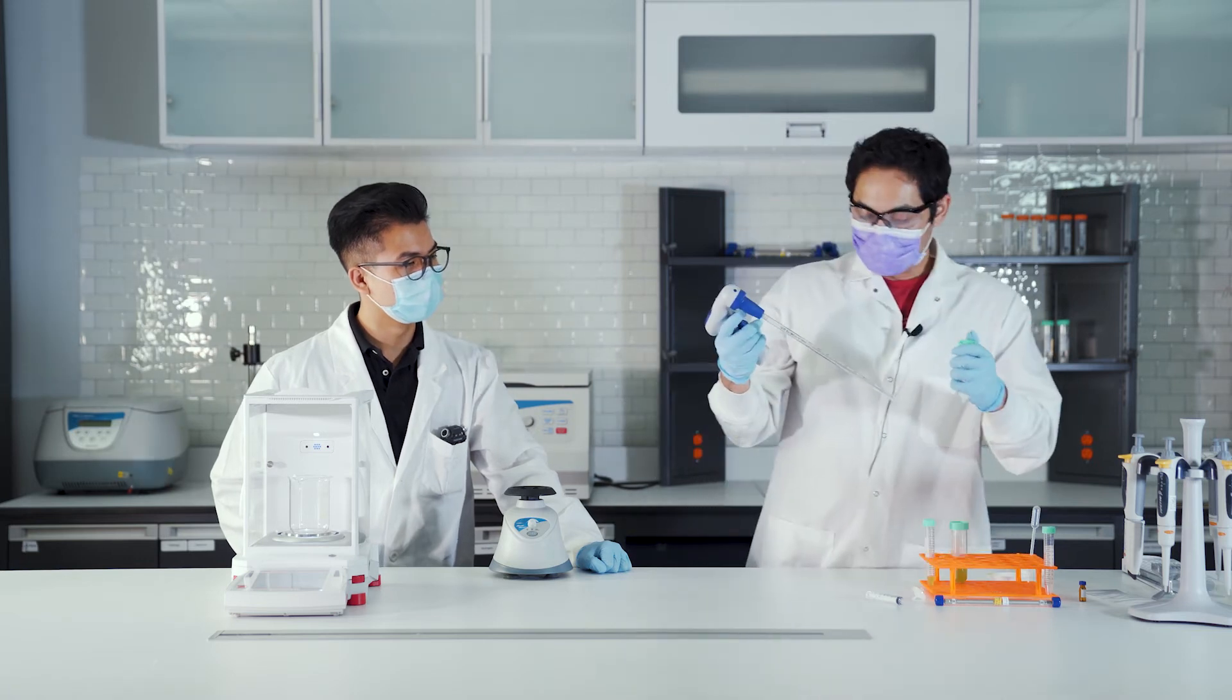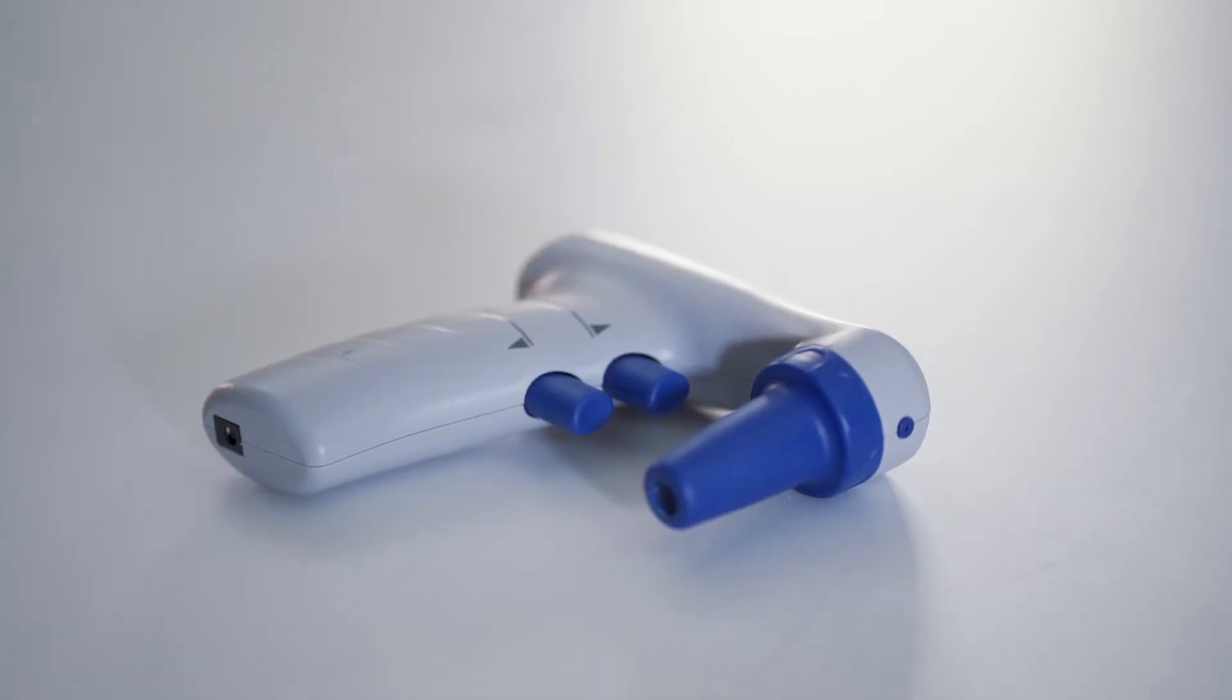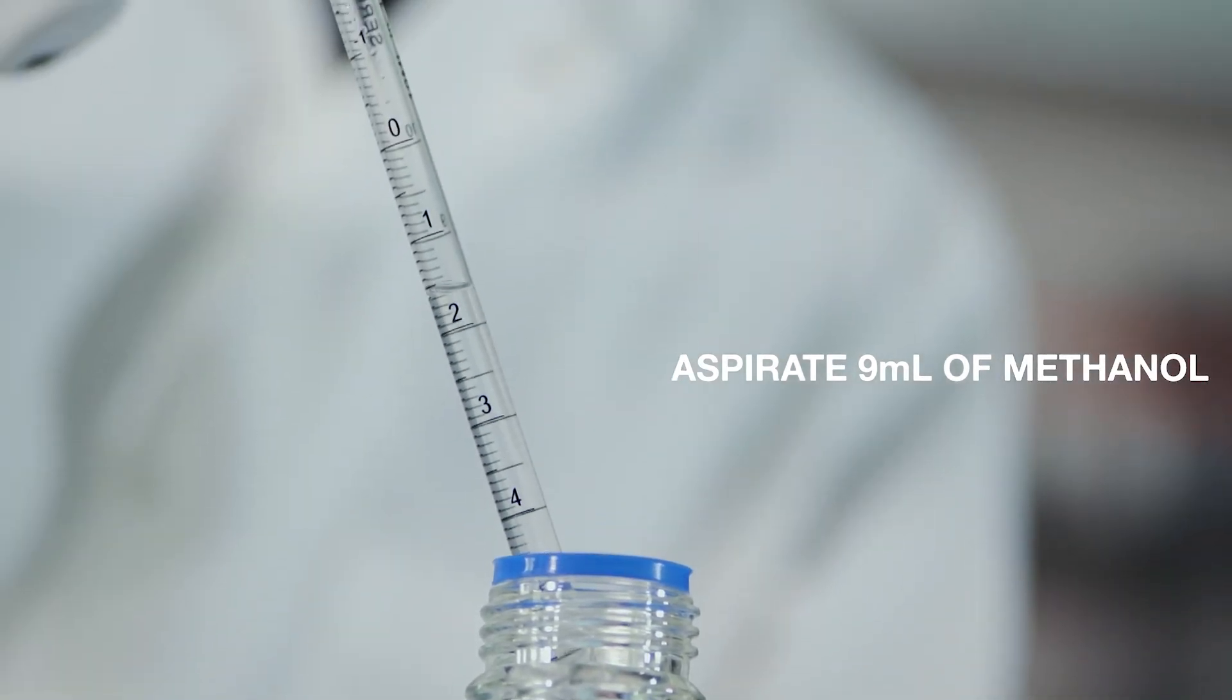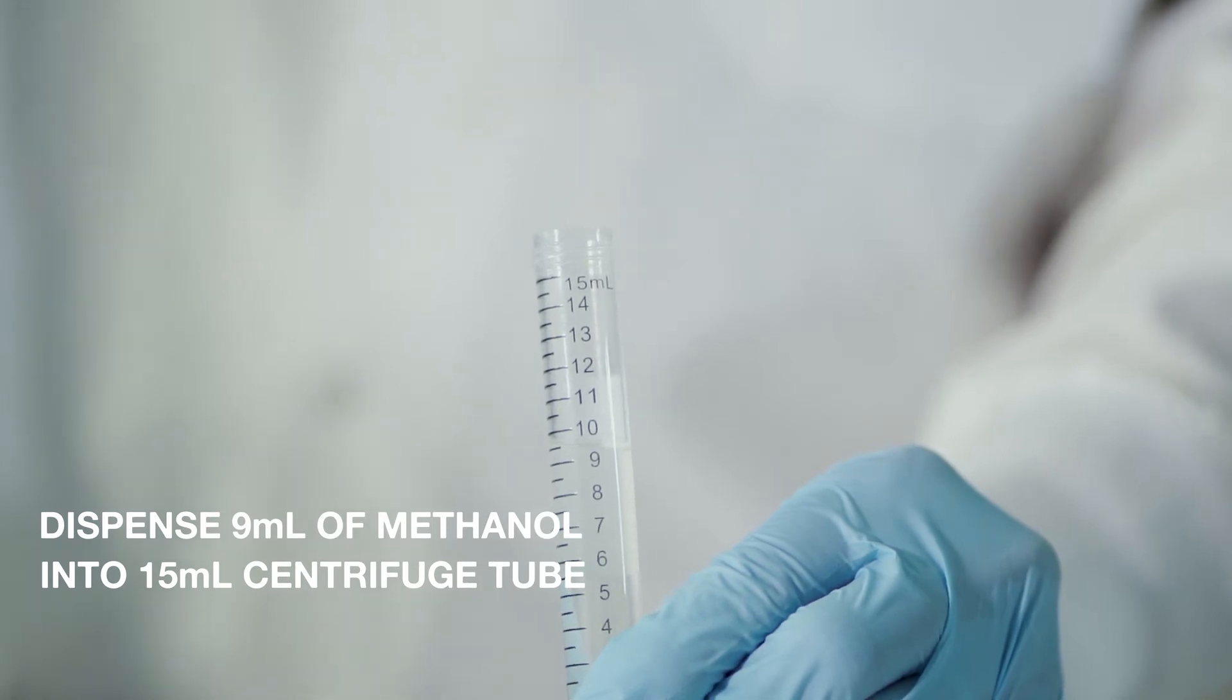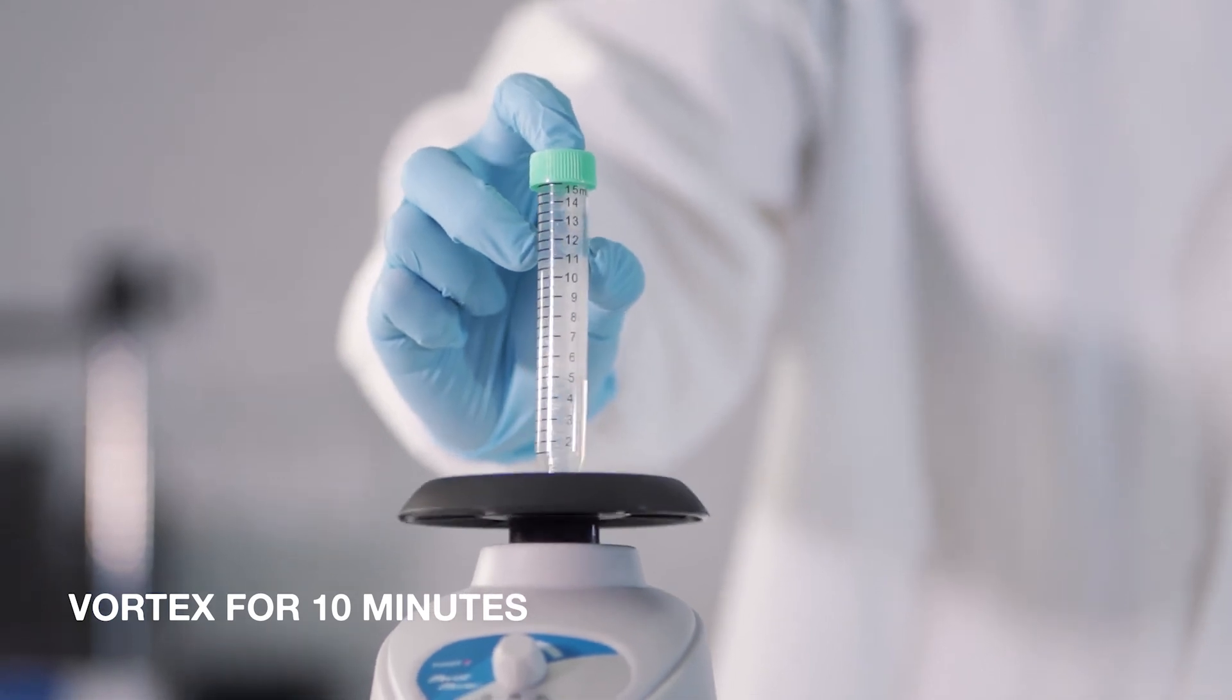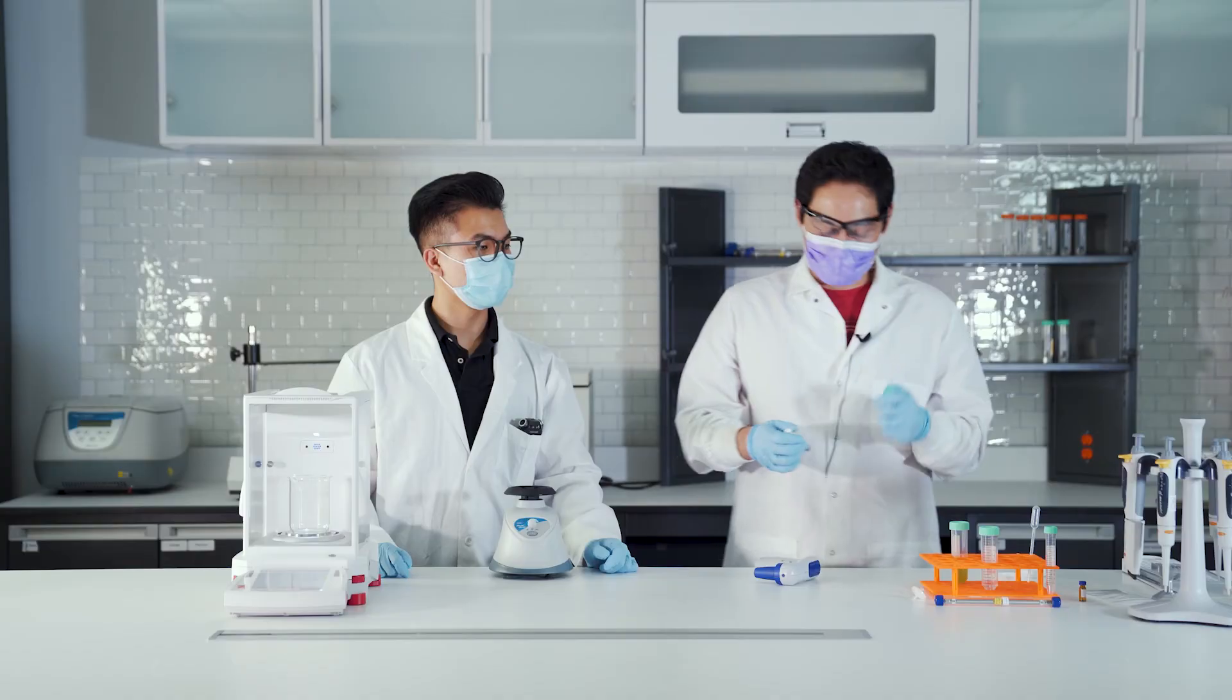This is a 10 mil pipette, so let's get this up to nine. That's about nine. So that's roughly 10 mils in there, and then we want to vortex and spin that down as well. Go ahead and vortex that. After you vortex that, you want to go ahead and get that into this centrifuge, and make sure to balance it with another.